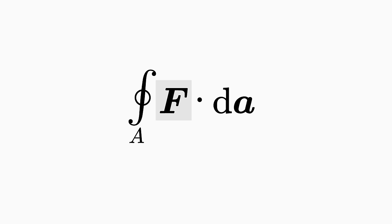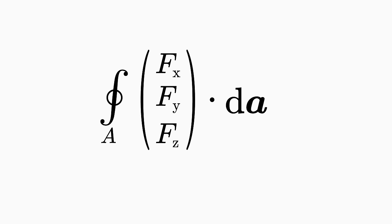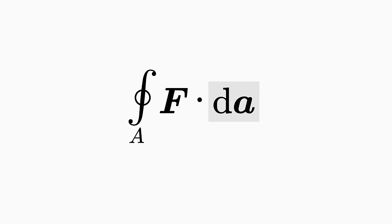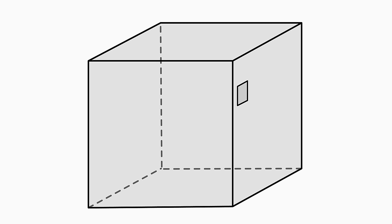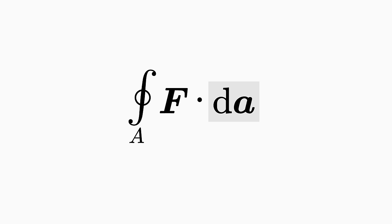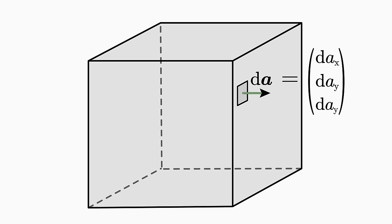F is a vector field and represents either the electric field or the magnetic field when considering the Maxwell equations. So it is a vector with three components. dA is an infinitesimal surface element, that is, an infinitely small surface element of the considered surface A. As you may have already noticed, the A in the dA element is shown in boldface, so it is a vector with a magnitude and a direction. The magnitude of the dA element indicates the area of this small piece of the surface.